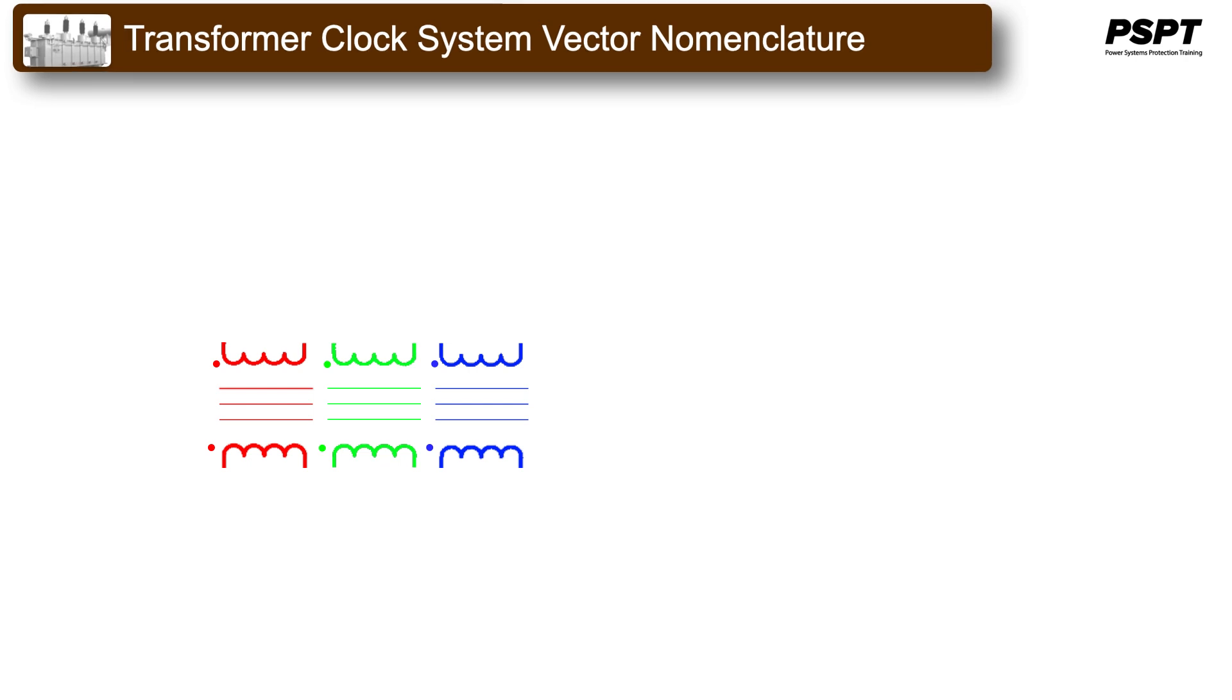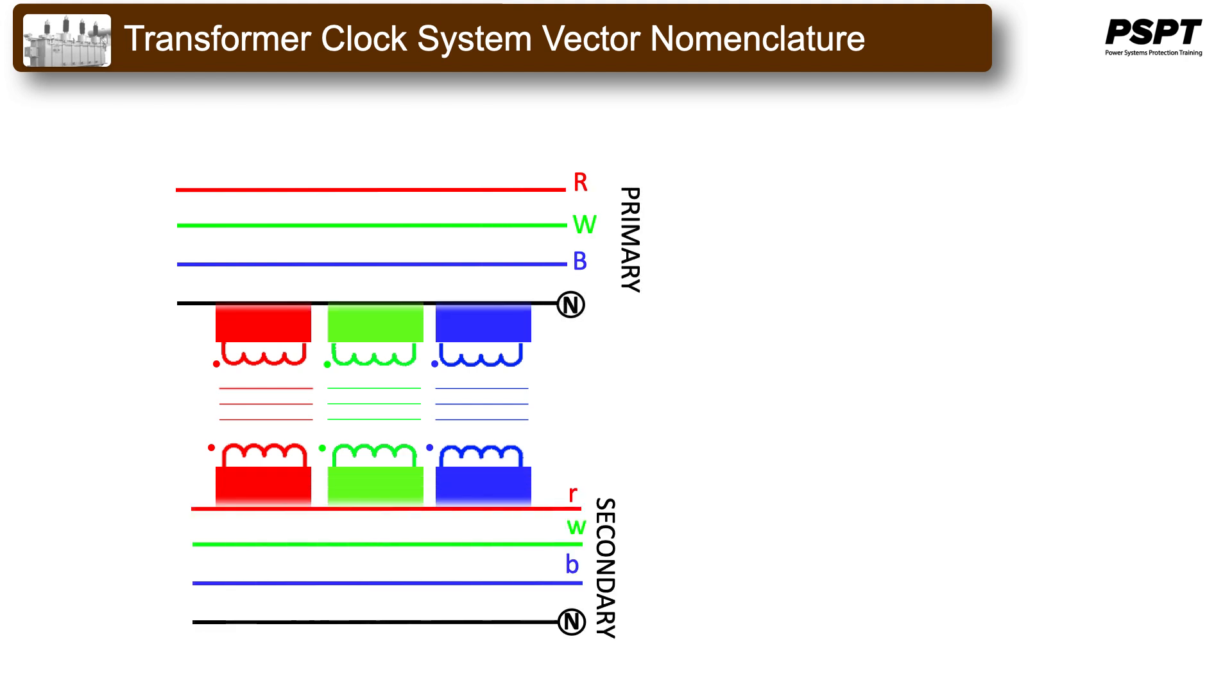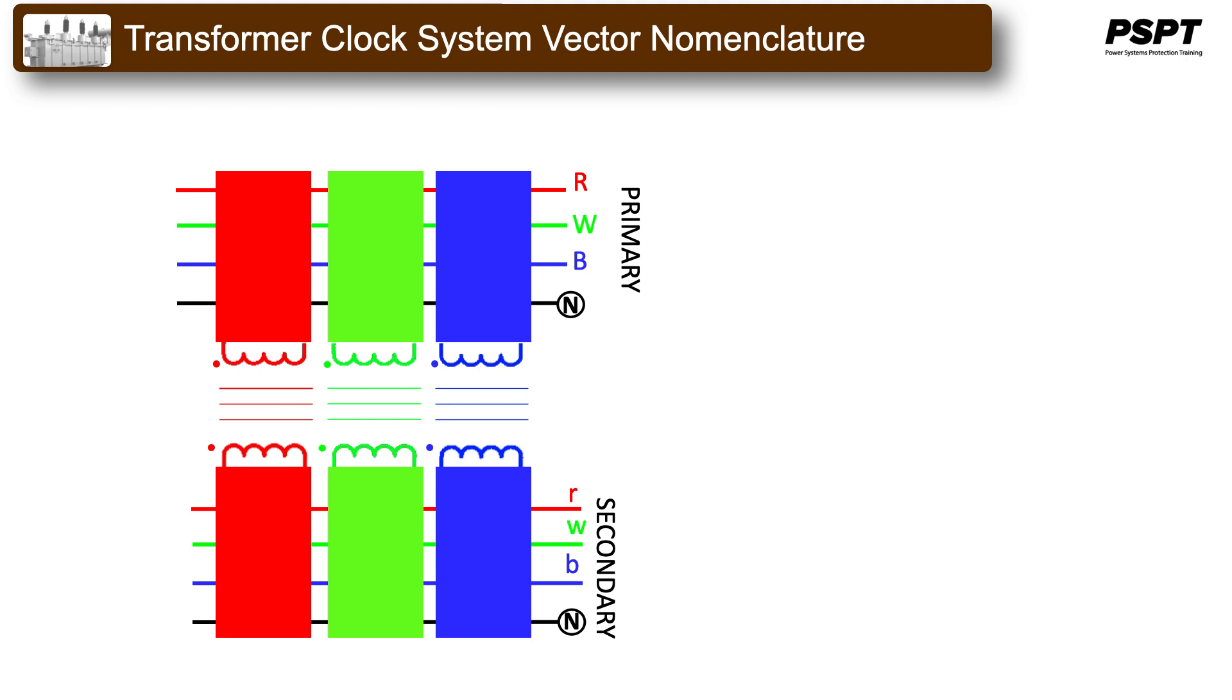With every power transformer installation, we will have a primary system connected to the primary side of the transformer and a secondary system connected to the secondary side of the transformer. For simplicity's sake, we can assume that the primary side is energized by a three-phase balanced set of voltages rotating counterclockwise and having a phasor separation of 120 degrees. Depending on the transformer connections, the secondary voltages can either be rotating in a clockwise or counterclockwise direction. Assuming we are still dealing with a balanced system, the secondary voltages are equal in magnitude and 120 degrees apart, but may lead or lag the associated primary voltages.